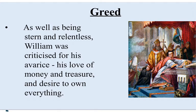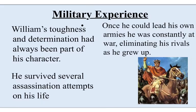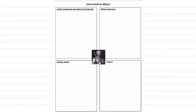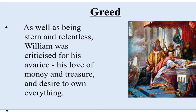Greed. As well as being stern and relentless, William was criticised for his avarice. Avarice is the love of money, treasure, nice things — so he was quite greedy in his desires to own nice things, his love of money and treasure, and his desire to own everything. This is definitely a description of his character. If you can use the word 'avarice' in your notes, that would be absolutely superb.